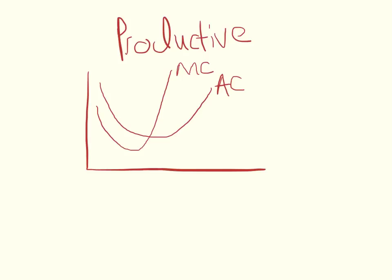and we say it's a competitive firm, so they're competing at where AR equals MR. The productively efficient level of output is the lowest point of AC, so it would be this point here.